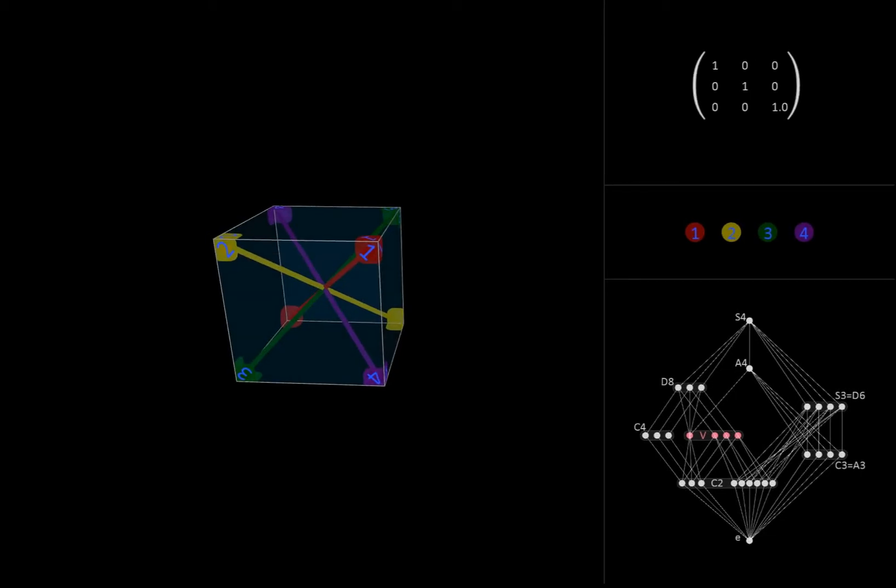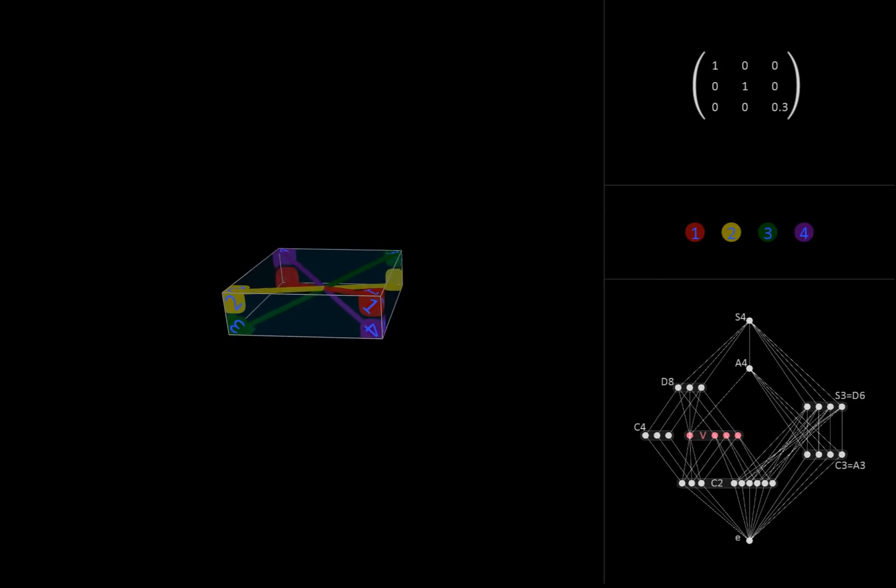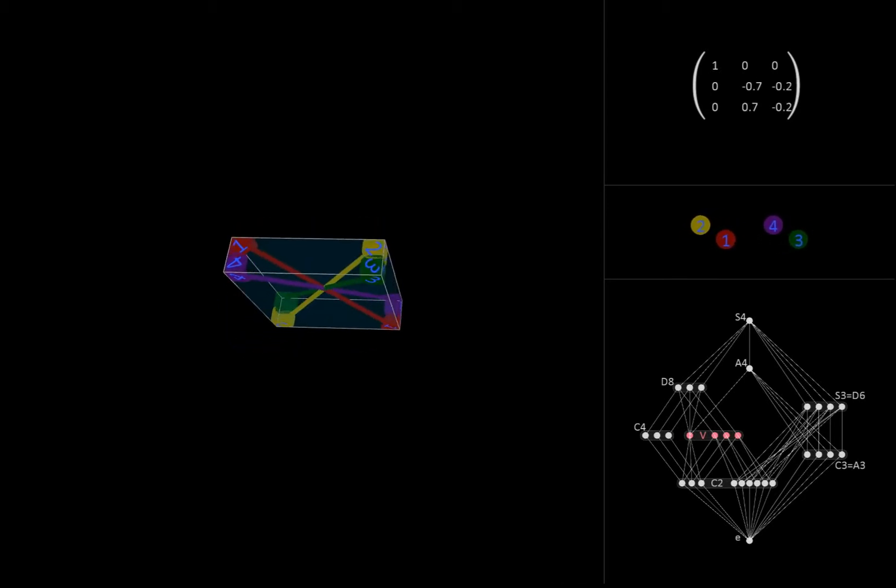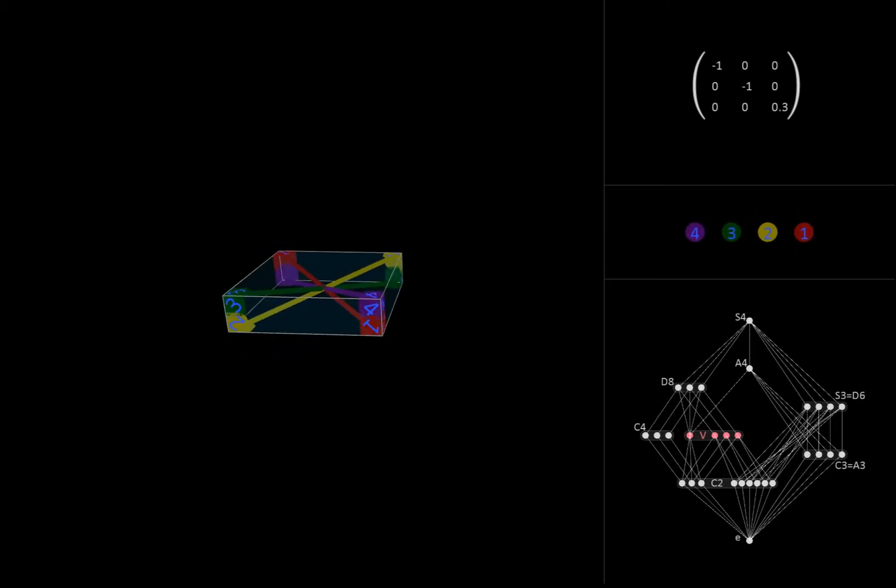We'll temporarily squish the cube along the z-axis just to recall what the Klein groups looked like in the more familiar context of symmetries of a square. One of them was generated by a 180-degree rotation about the x-axis and a 180-degree rotation about the y-axis. As we saw in a previous video, combining these two operations is in fact equivalent to a 180-degree rotation about the z-axis.